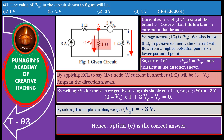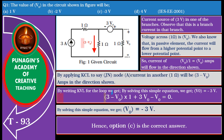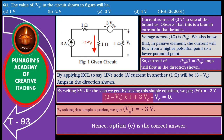the current in the other 1 ohm resistor will be (3 minus V0) amperes in the direction shown. By writing KVL for the loop, we get (3 minus V0) into 1 plus 3V0 minus V0 equals 0. By solving this simple equation, we get V0 equals minus 3 volts. Hence, option C is the correct answer.